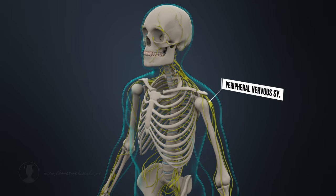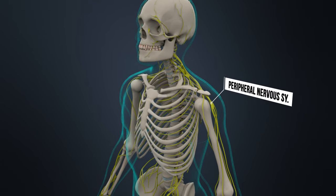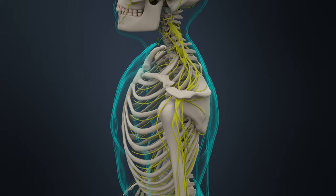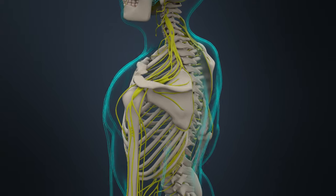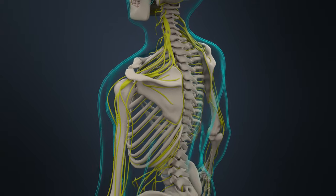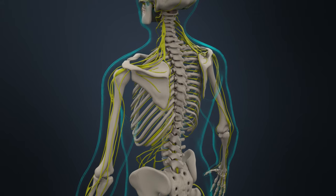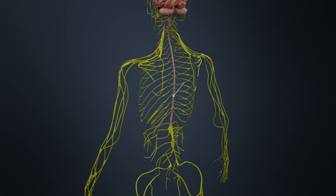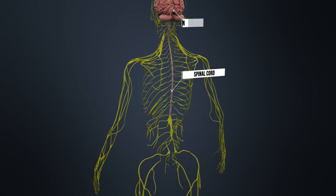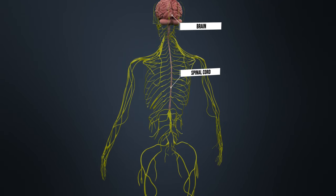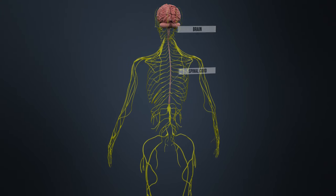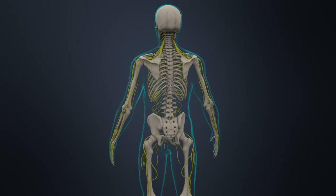The peripheral nervous system runs through the entire body and is shown here in yellow. The brain and spinal cord are part of the central nervous system. They are well protected by the skull and spinal column.